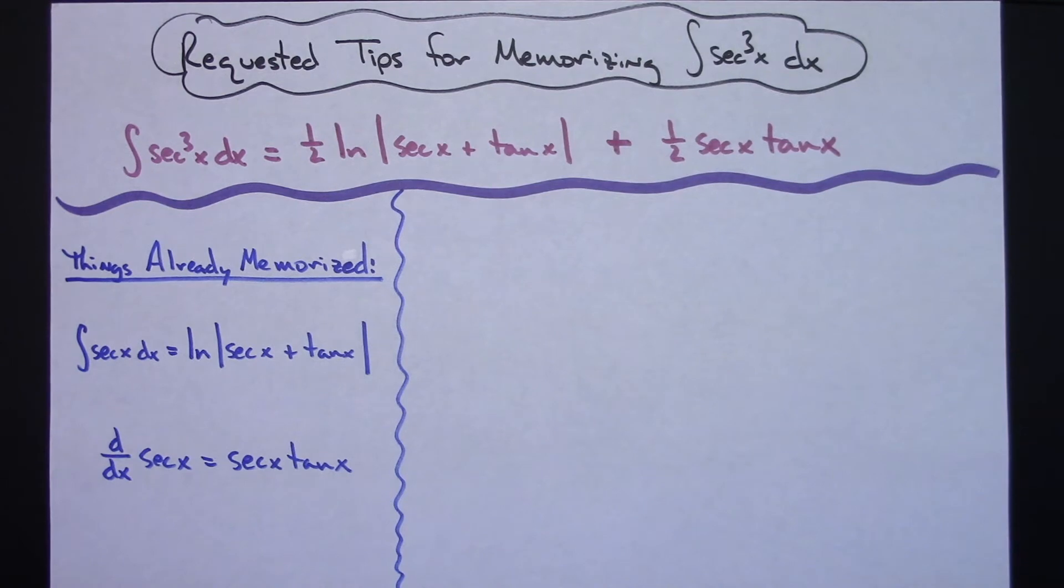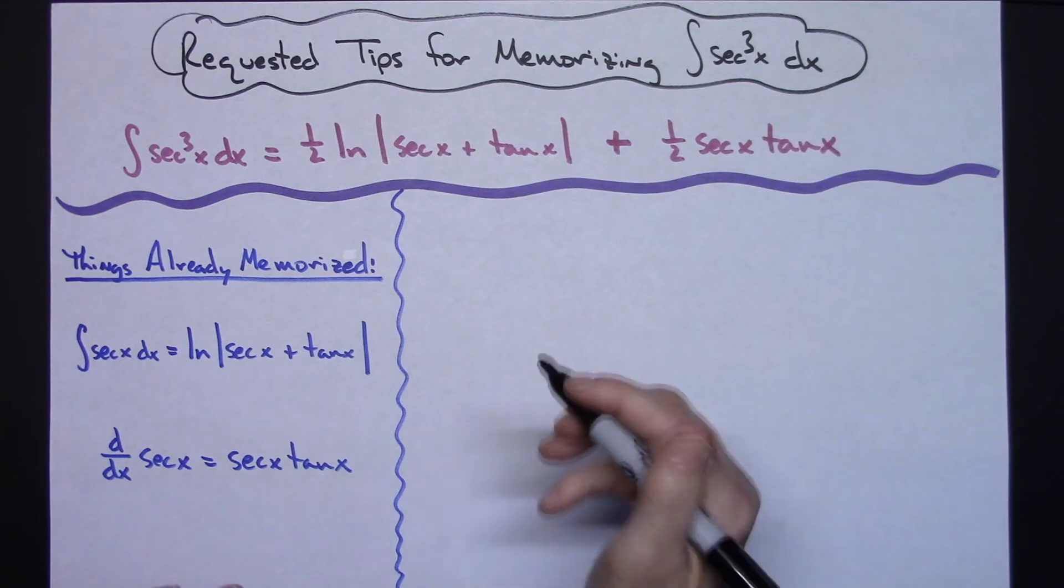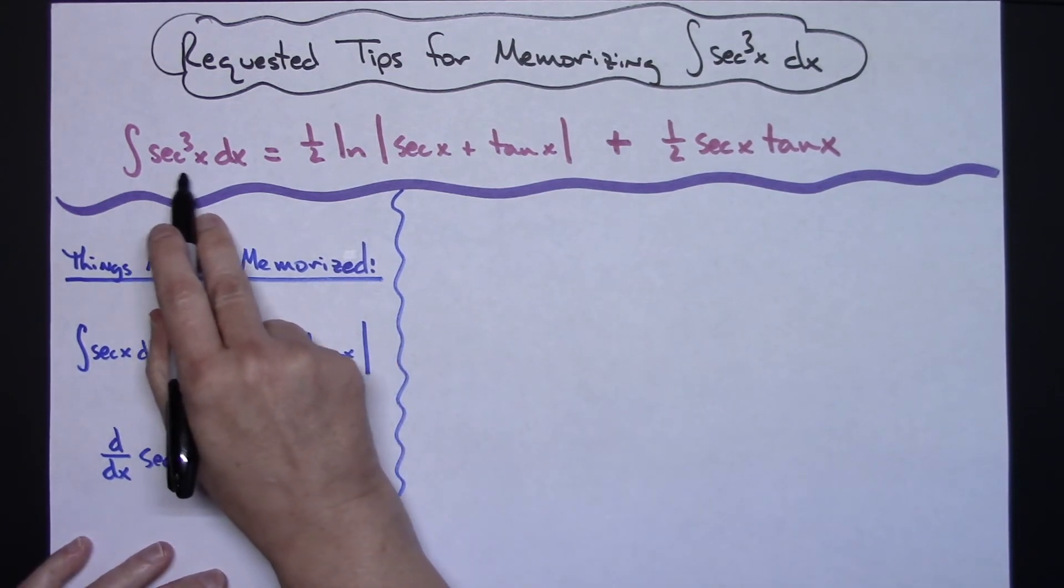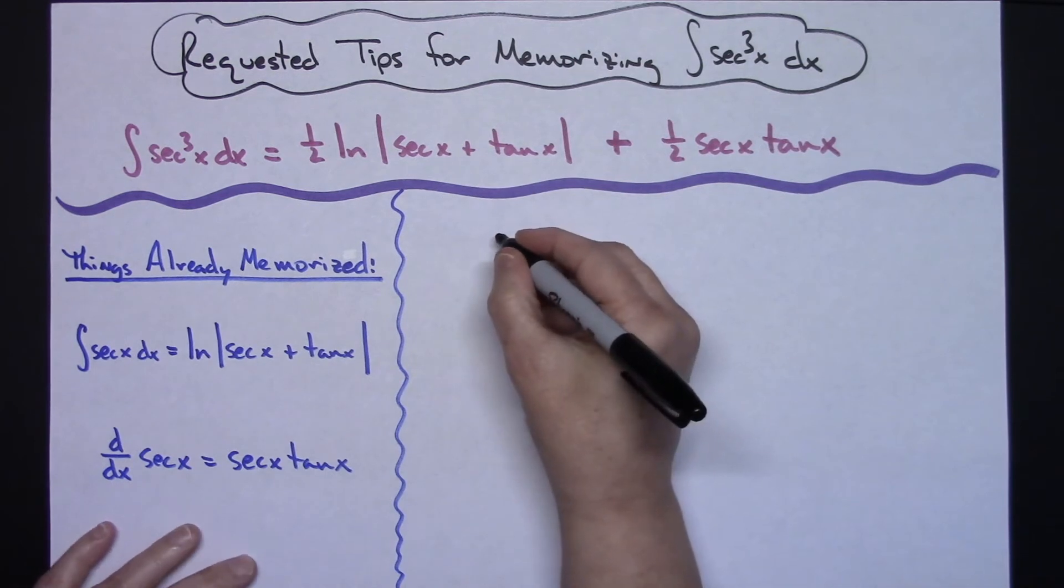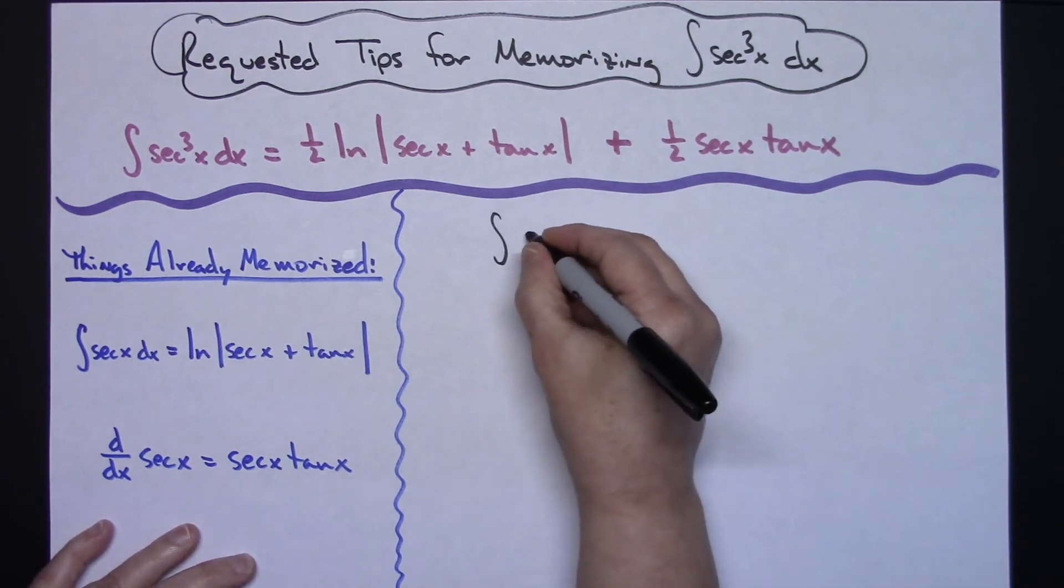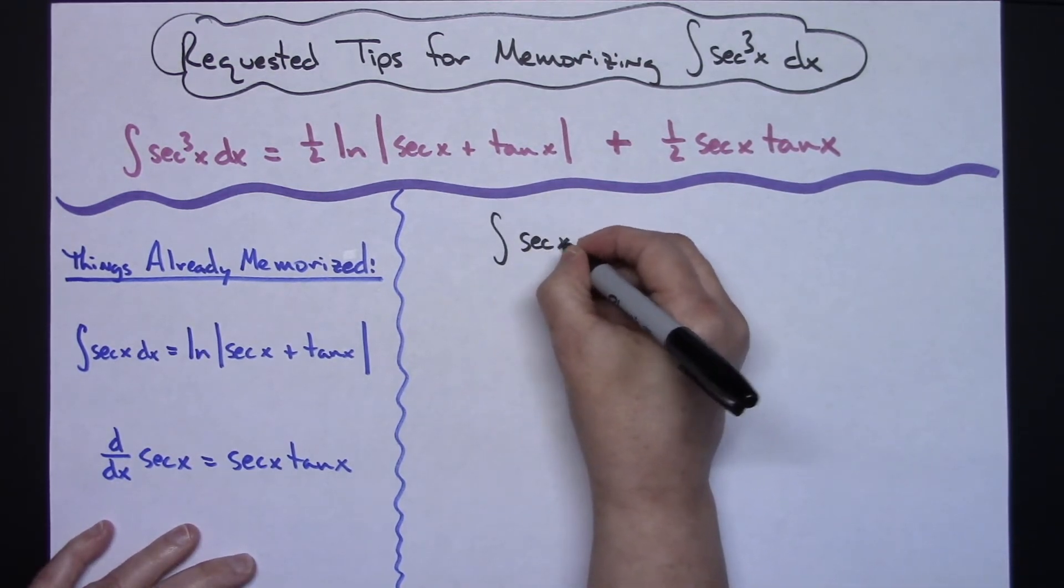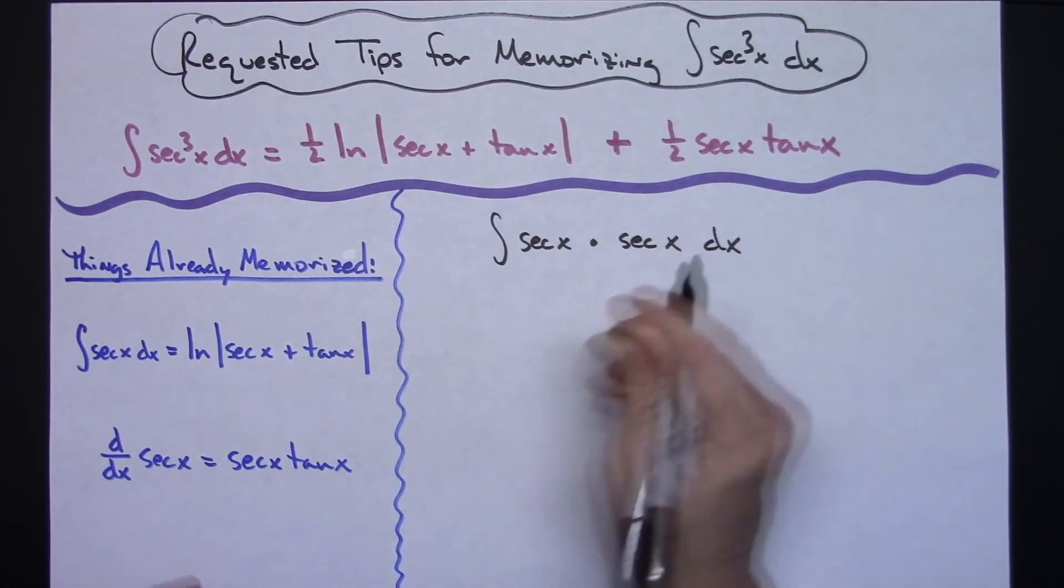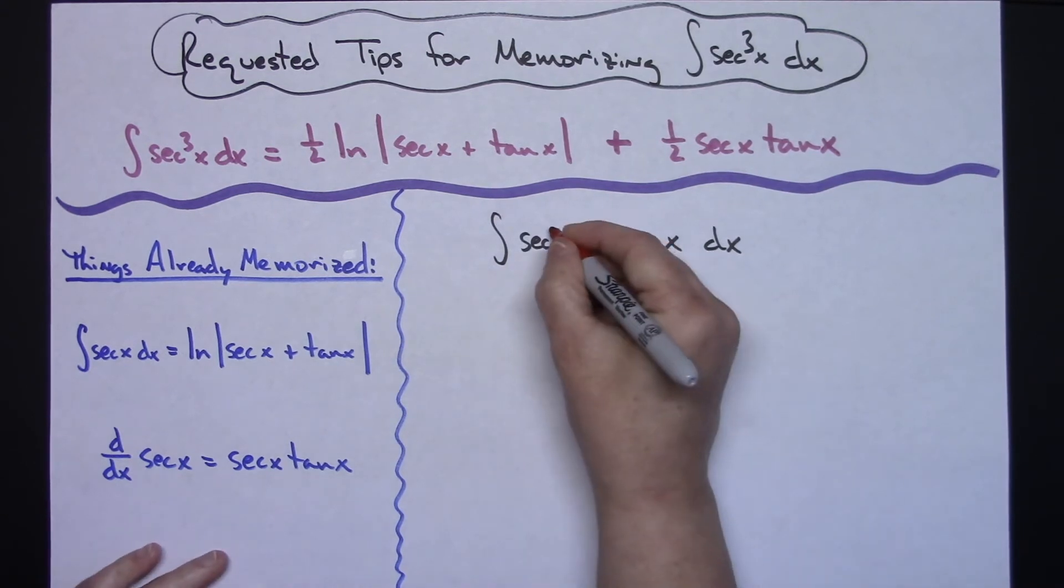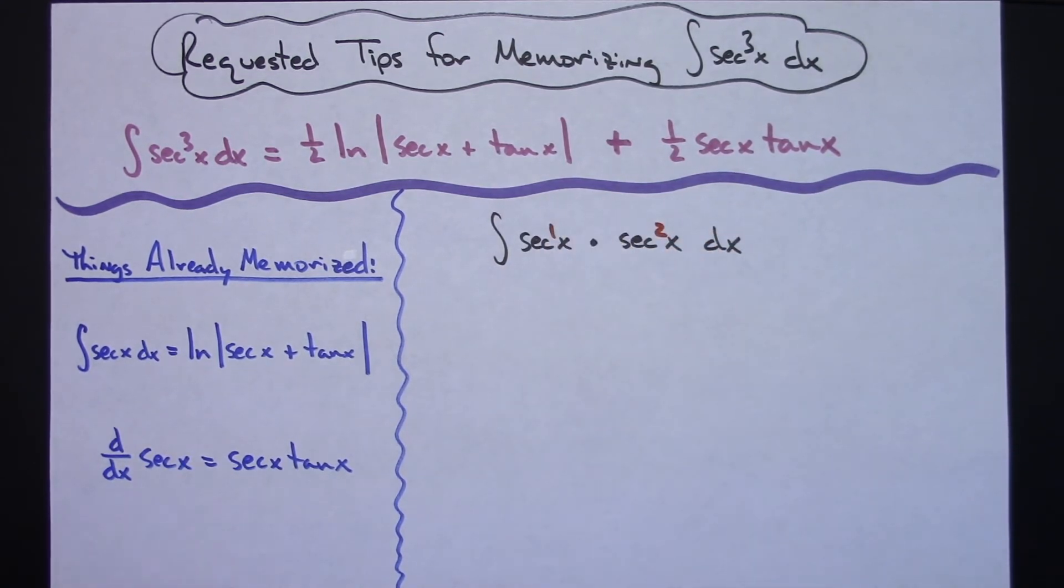So if I was going to attempt to try to memorize this answer for the integral of secant x cubed, the first thing I would think is okay, I've got three of these and I need to break them up. I'm going to break them up into the integral of a secant x times a secant squared x. So this would be a secant to the first and this would be a secant squared.